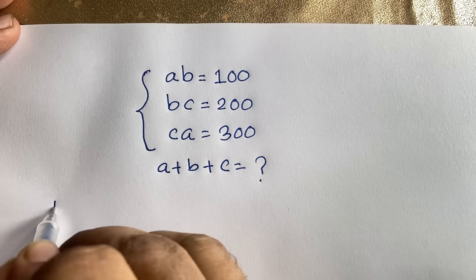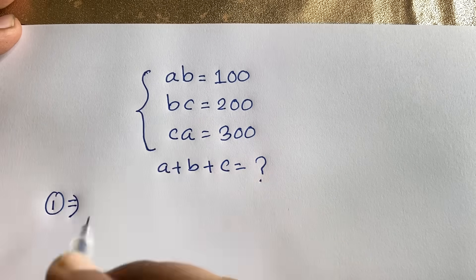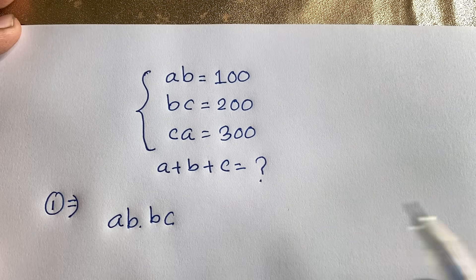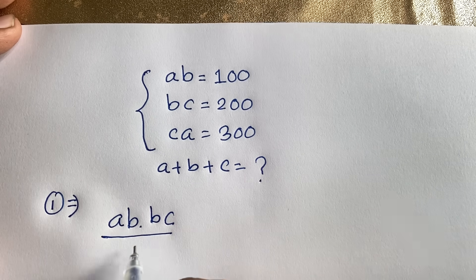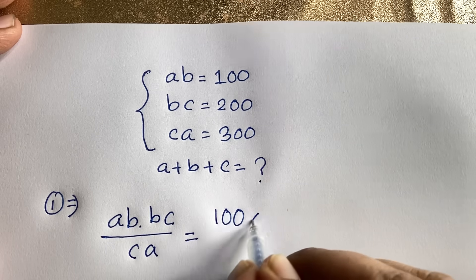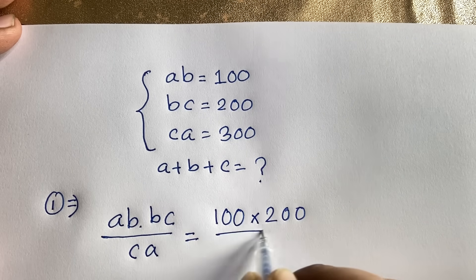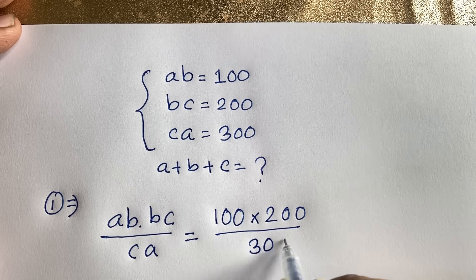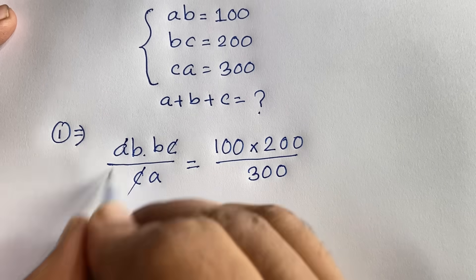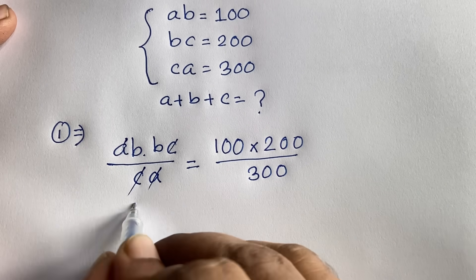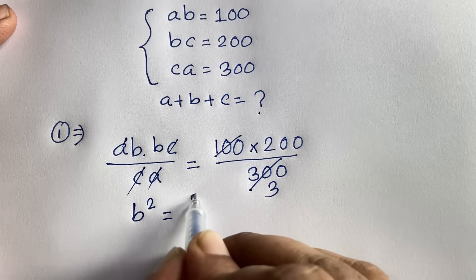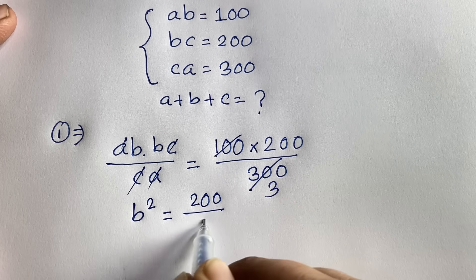Step 1: I multiply the first equation and the second equation. So it will be AB times BC, and divide by the third equation, it will be CA. So I can say it will be 100 times 200 divided by 300. In this expression, C cancels and A cancels, and we find out here is B squared is equal to 200 divided by 3.